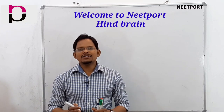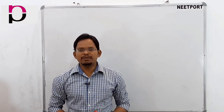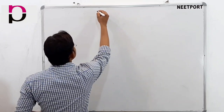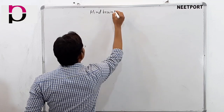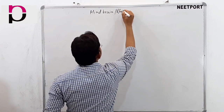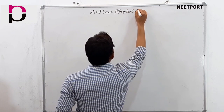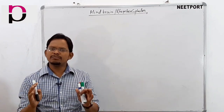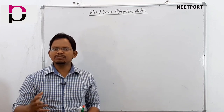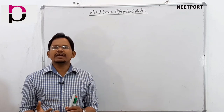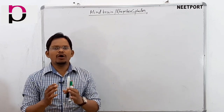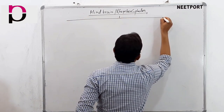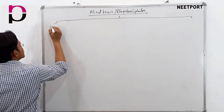Hello everyone, welcome back to Knitport. In the last video we discussed about the mesencephalon or midbrain. Today in this video we will discuss about the hindbrain or rhombencephalon. The hindbrain is divided into three parts: the first part is cerebellum, second is pons varoli, and third is medulla oblongata.